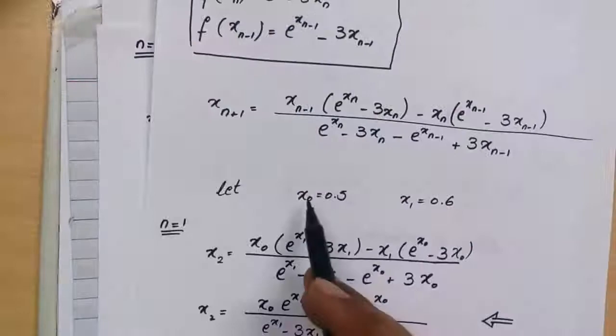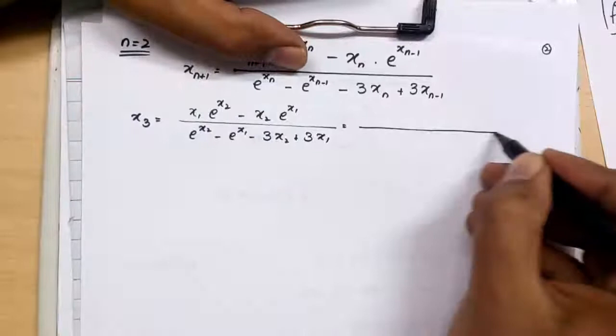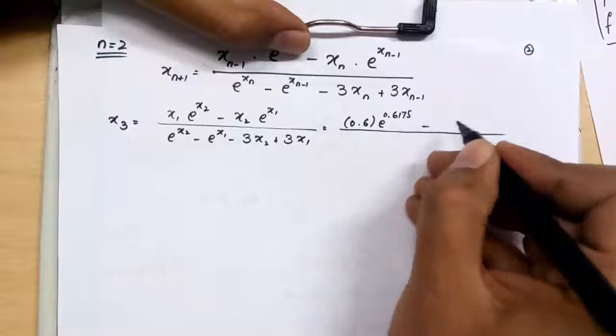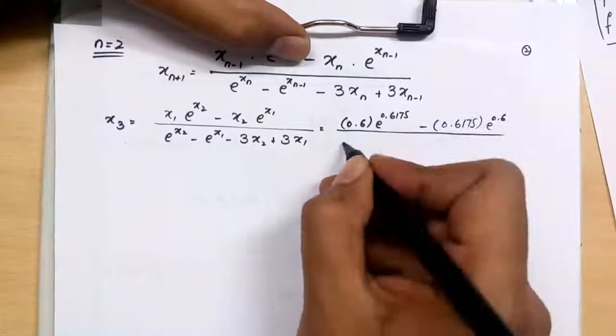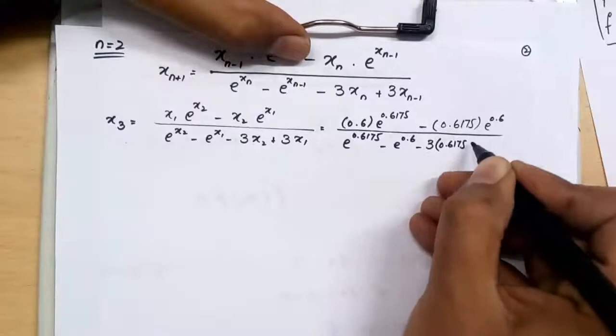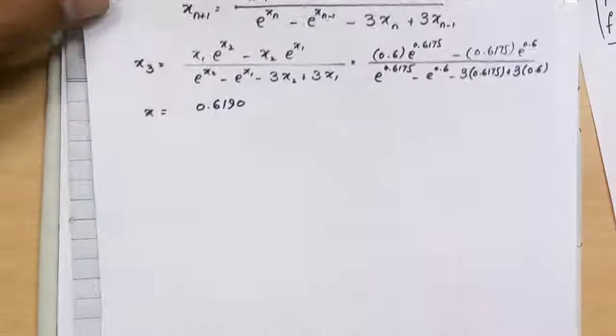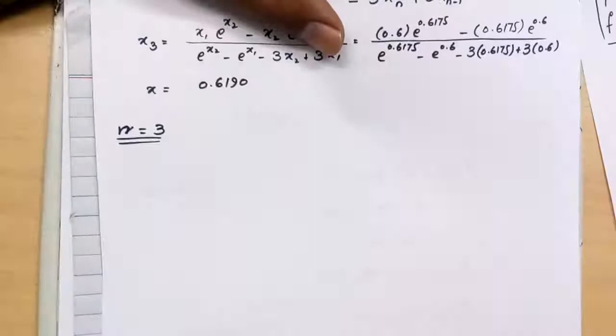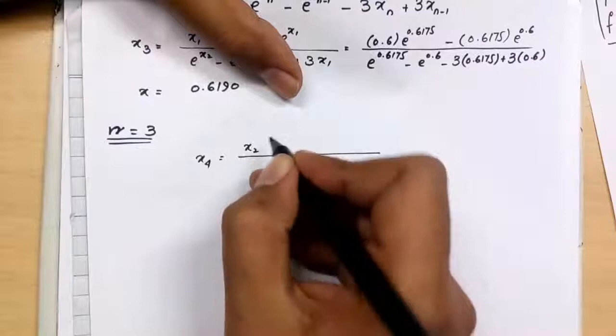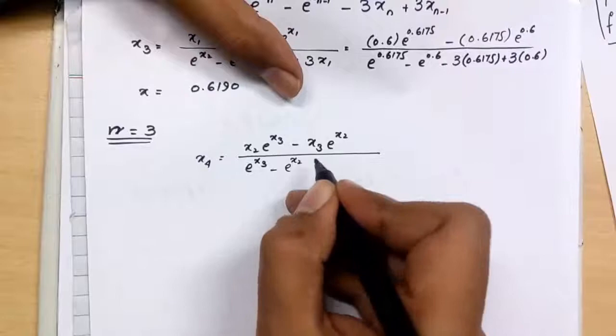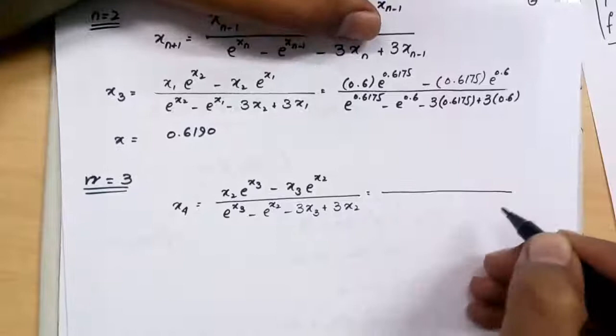We have values of x_1 and x_2, so just solve the relation. Now n would be 3. This is the general relation - put the values and solve it.